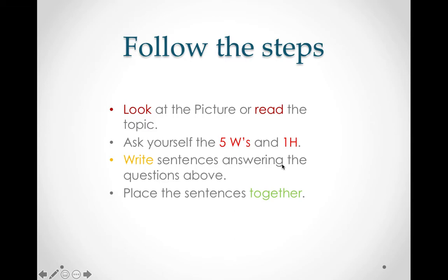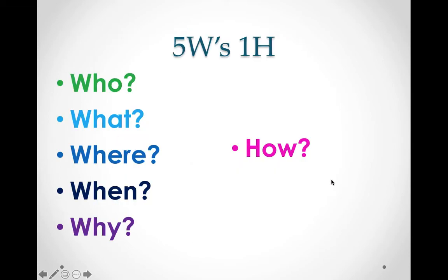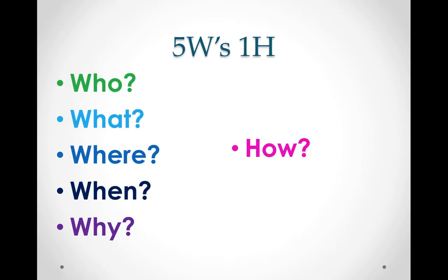We are going to look at the following picture and read the topic. These are toys. The topic for today is My Favorite Toy. You are going to think of sentences for this topic using your five W's and one H: Who, What, Where, When, Why, and How. These are your question words. You can look at the topic or picture and ask yourself questions using these words — the answer to your questions will be your sentence.